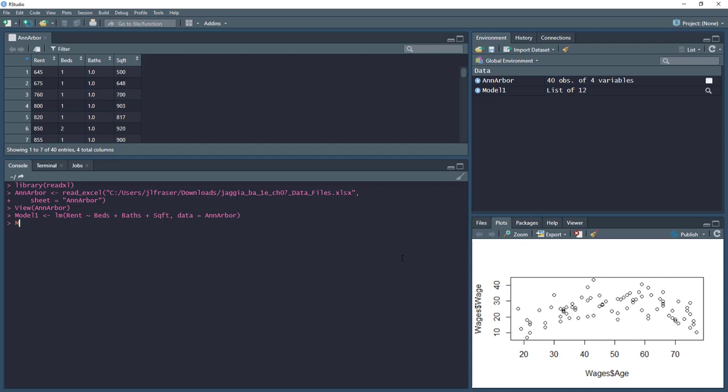Model number 2 is very similar, except we're going to take the log of the square footage variable. We do that by typing out log and then we put the name of the variable inside the brackets. Again, our data from the Ann Arbor dataset. So that's going to be model 2.